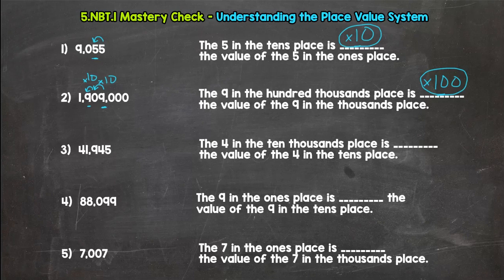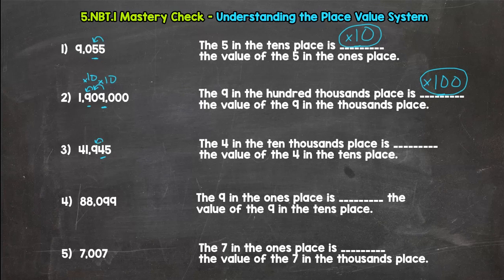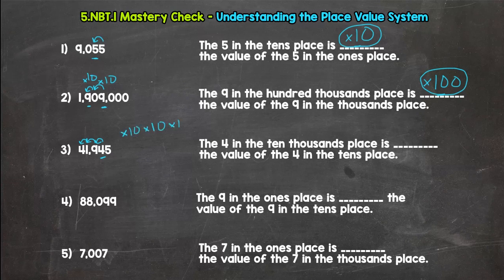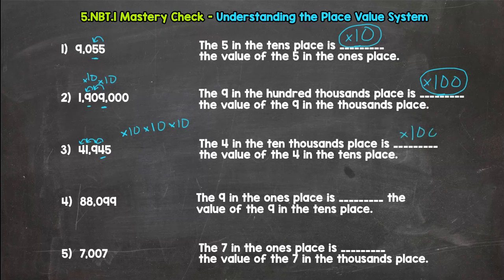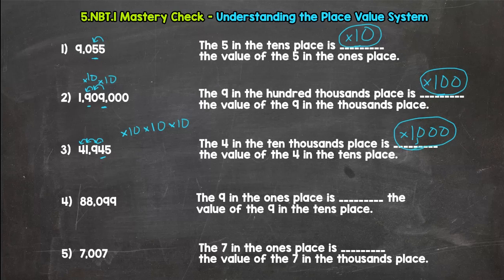Number three: the four in the ten thousands place is blank the value of the four in the tens place. So we're going from the four in the tens. One, two, three jumps to the left. So ten times ten times ten. So that should be one thousand. Now let's read our sentence back. The four in the ten thousands place is one thousand times the value of the four in the tens place. That is true.